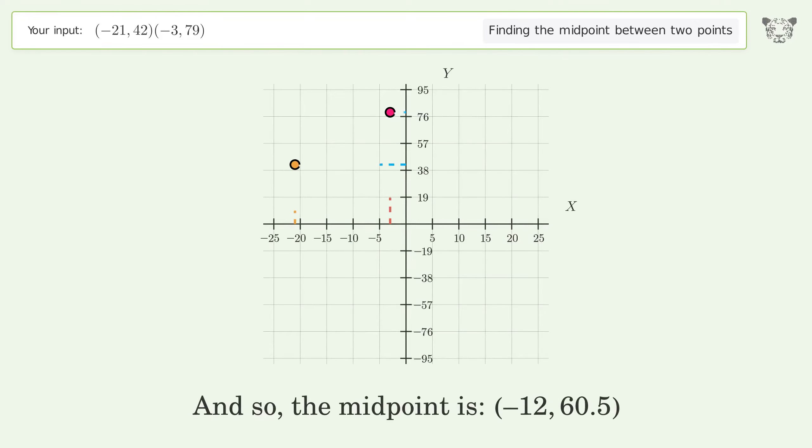And so, the midpoint is negative 12, 60.5.